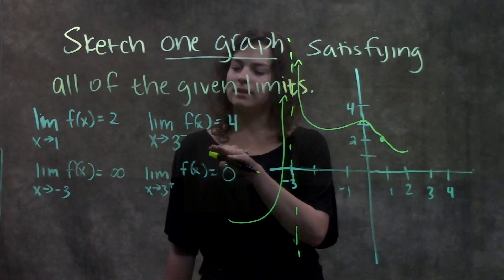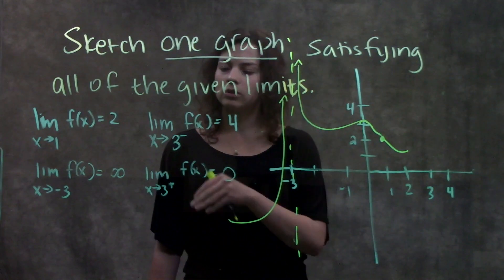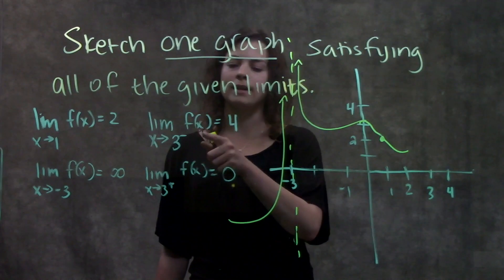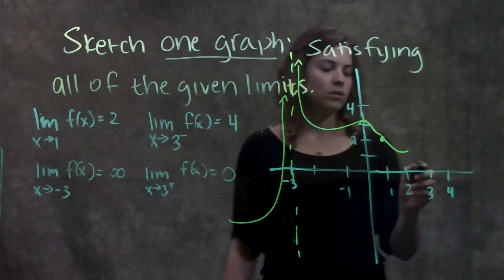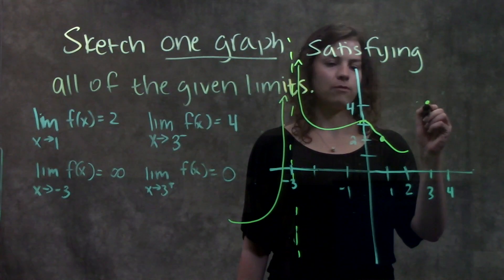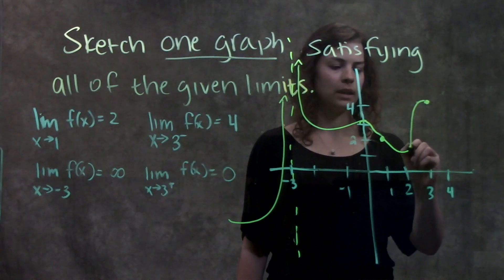Then we go on to our next limit. The limit as x approaches 3 from the left-hand side, the superscript minus means from the left of f(x) is equal to 4. We go to 3, and from the left-hand side, the graph is approaching 4, which is right there. I'm going to connect these two.